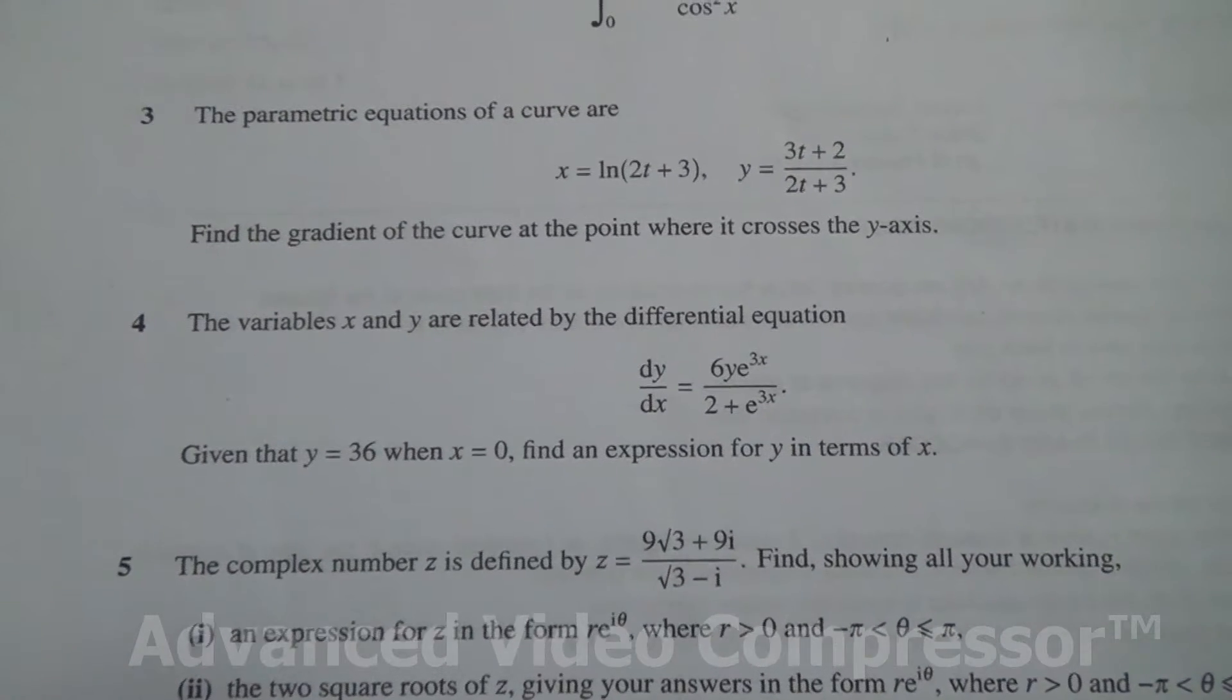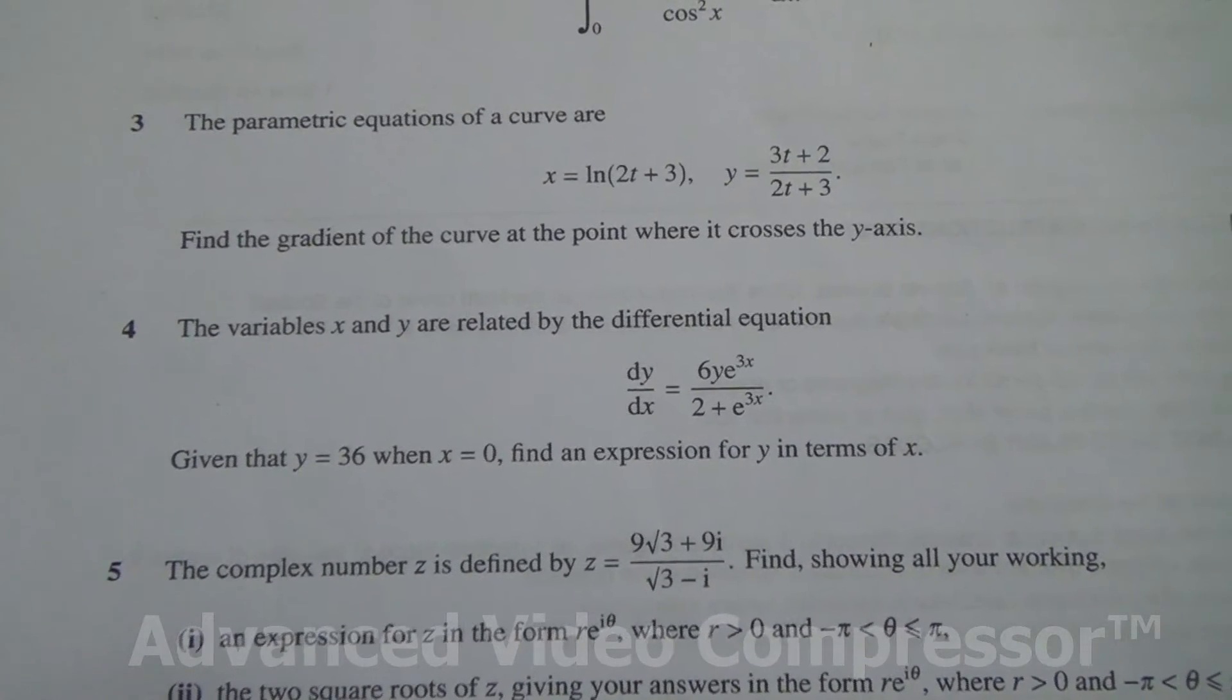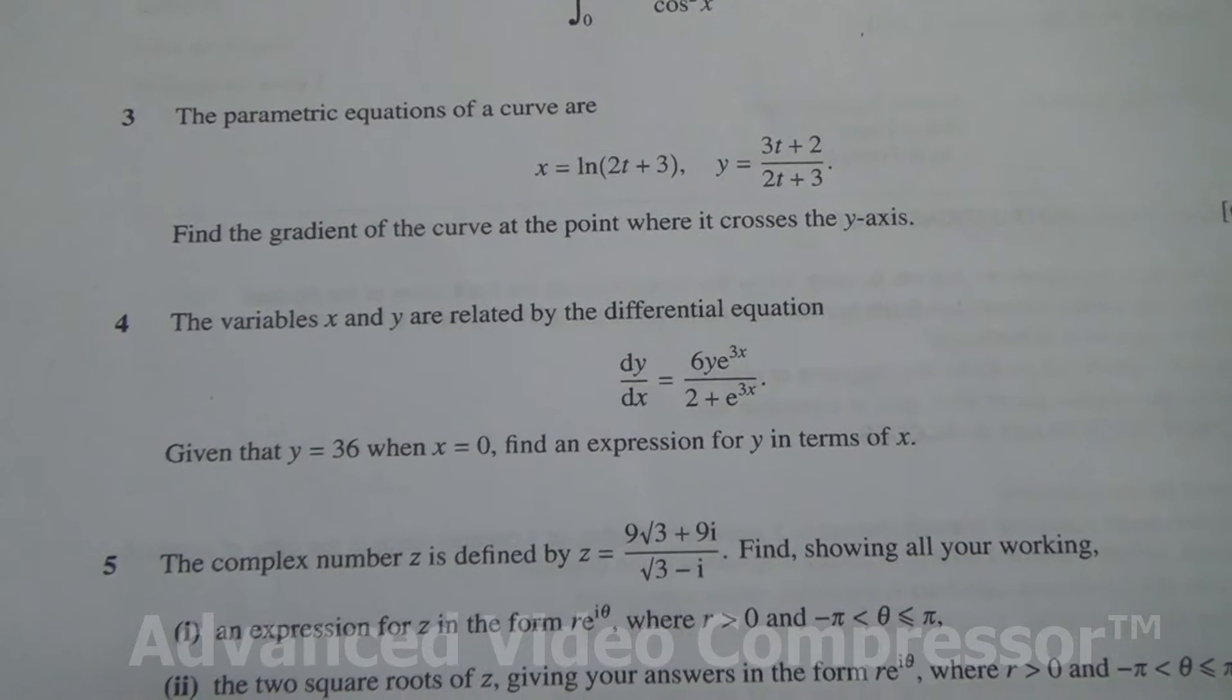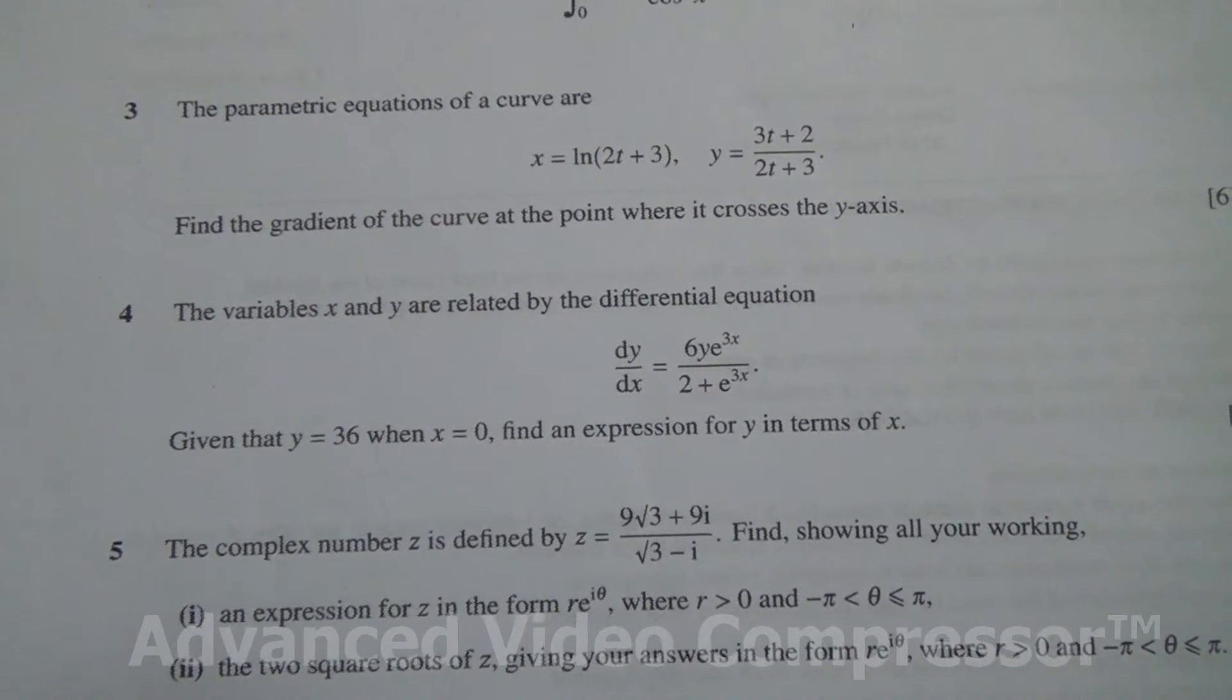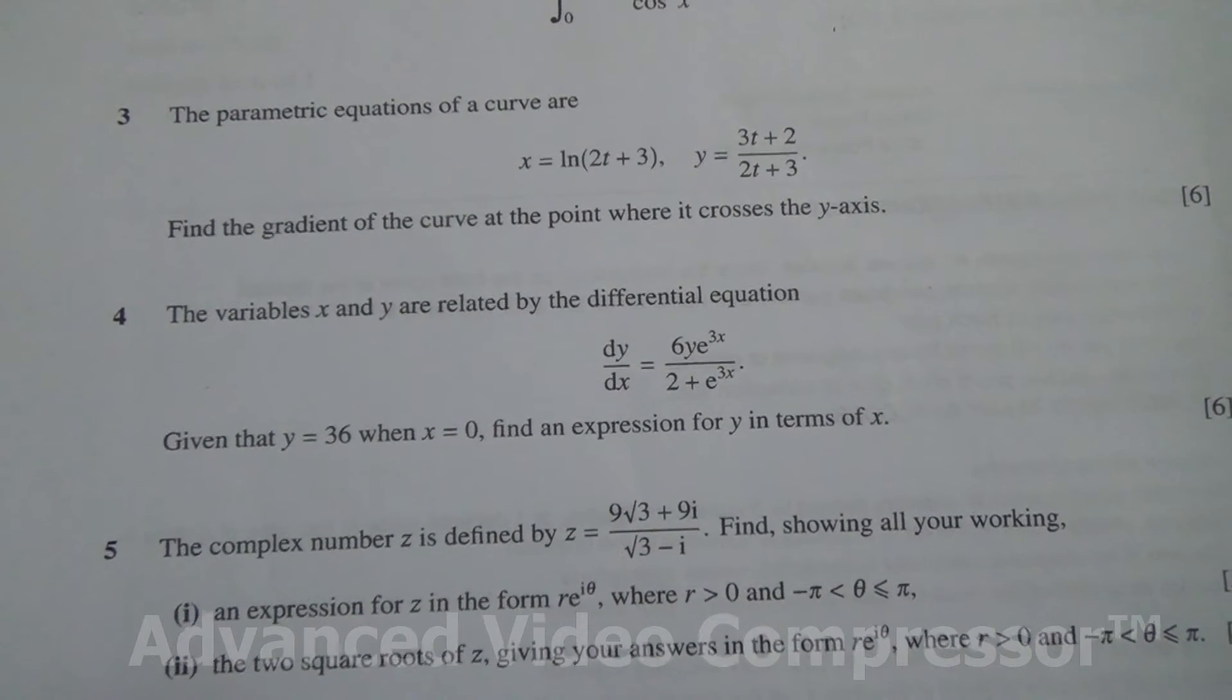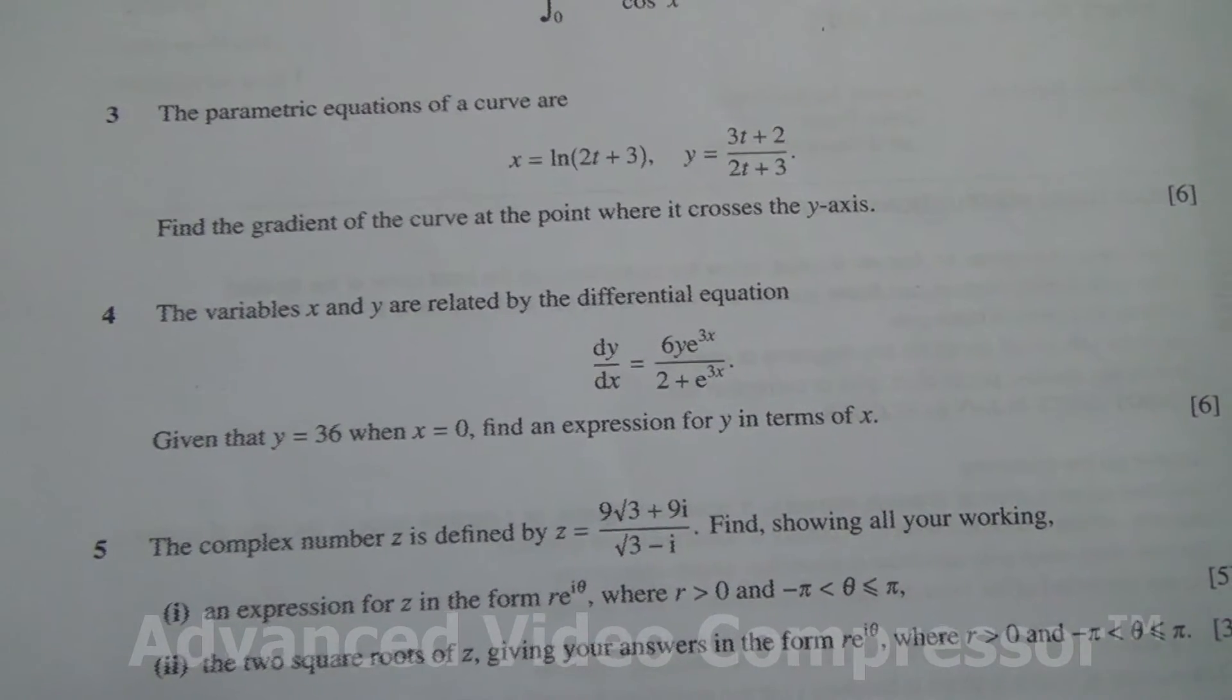Hi, question number 4. The variables x and y are related by the differential equation dy by dx equal to 6y e to the 3x over 2 plus e to the 3x. Given that y is equal to 36 when x is equal to 0, find the expression for y in terms of x.